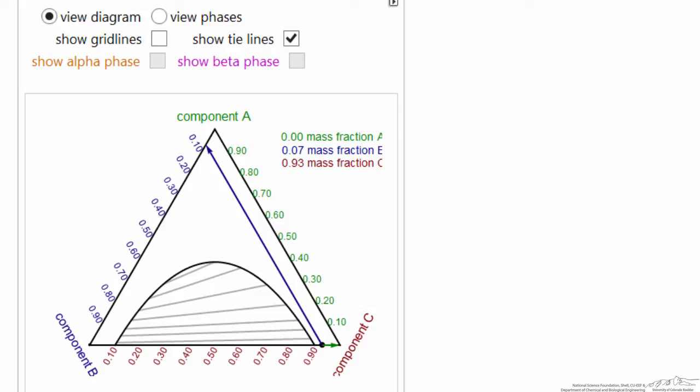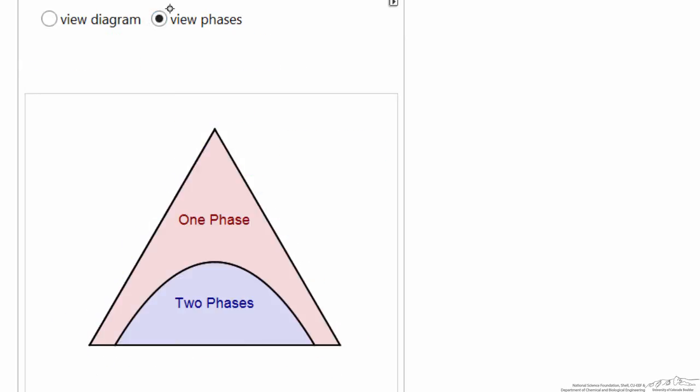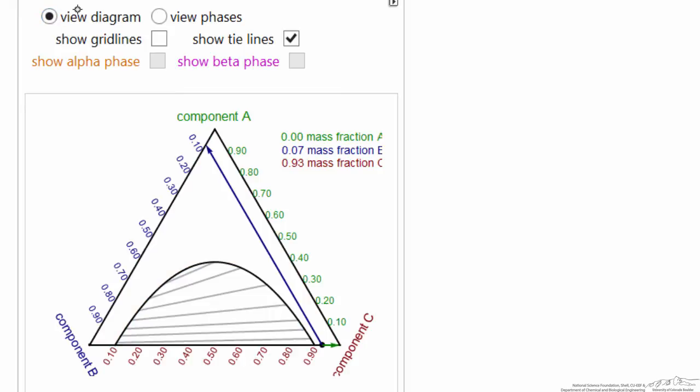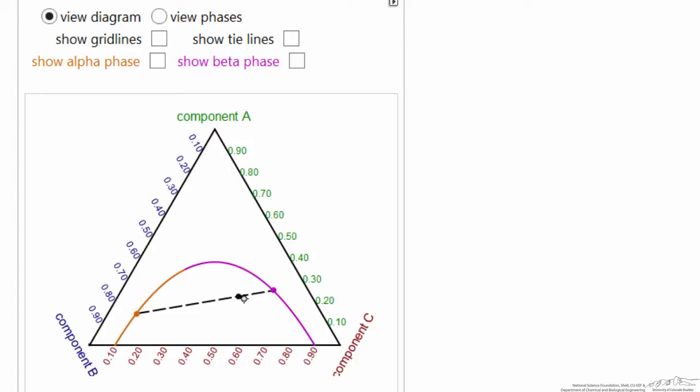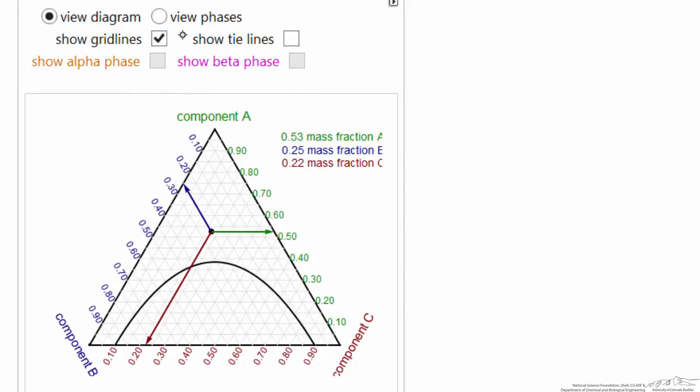So here's one of the interactive simulations, and I can select this option to better illustrate where we have one phase and where we have two phases on the diagram. And then I can select what I want to display, so I can remove the tie lines to make it less cluttered. I've moved the point around, so I can move the point so it's in the two phase region, in the one phase region,